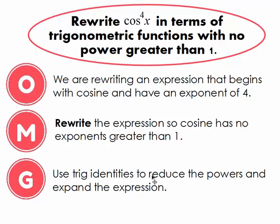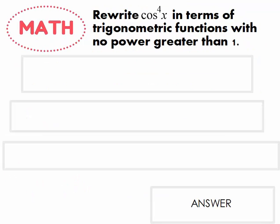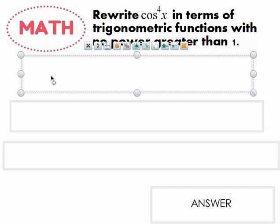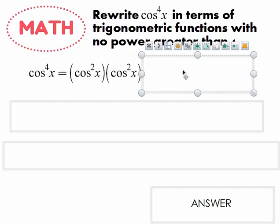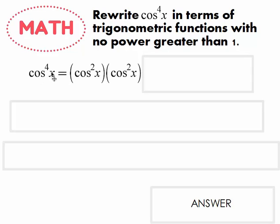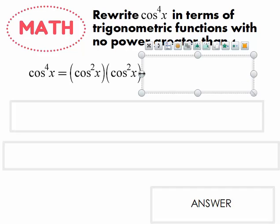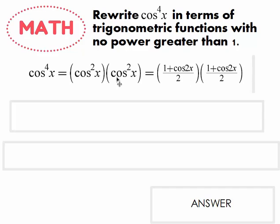Our game plan is to use our trig identities to reduce powers and expand the expression. I wrote all this out beforehand, so I'm going to walk you through it with nicely typed math. We start with cosine to the fourth x, which we can rewrite as cosine squared x times cosine squared x. Cosine squared x is one of our power reducing identities, so we replace each of those with its power reducing identity, as given on the previous slide.